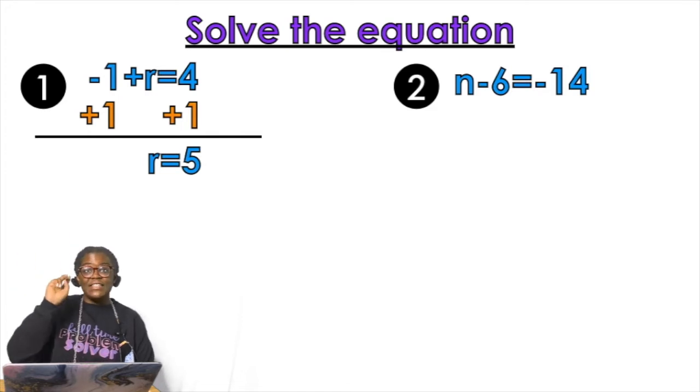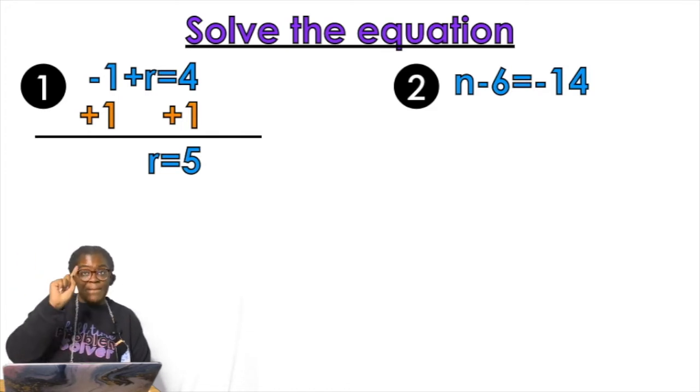On the other side, example number two, I have n minus six equals negative 14. So what I'm going to do is I need to get rid of that negative six because remember we want the variable to be alone. We want it to be lonely. Isolated. Isolation means alone.